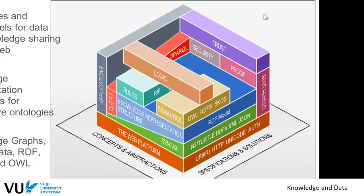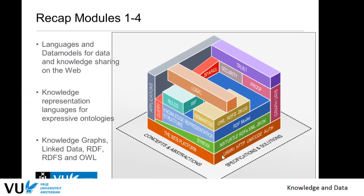If you look at the entire picture of data publishing and accessing on the web, we have covered quite a lot of the pyramid, or the semantic web stack as it is called. There is much more, but for this course the most important things are: the web as a platform for publishing and accessing data, knowledge representation structures for publishing knowledge graphs, different syntaxes for this, the opportunity of building queries, and now at the end, application building on top of all these different layers of technology.